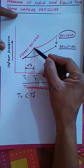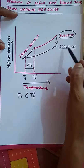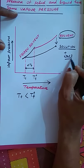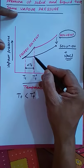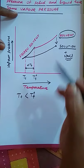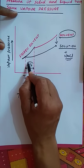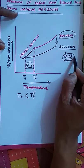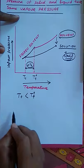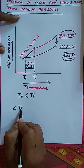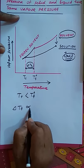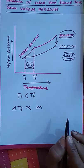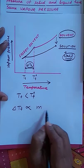This depression depends on the number of solute particles. So, depression in freezing point is directly proportional to the molality of the solution. Similar to elevation in boiling point, we write: ΔTf = Kf × m, where Kf is the proportionality constant known as the molal depression constant or freezing point constant.